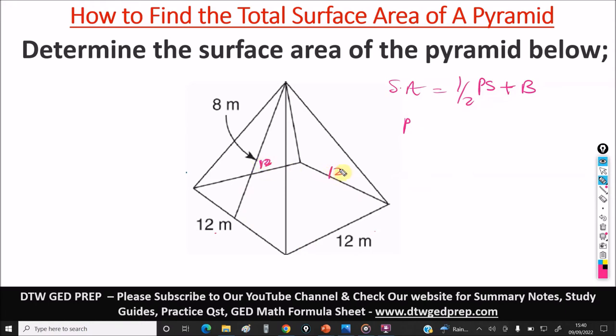The perimeter of the base: this is 12, this is 12. The perimeter of anything is just the summation of all its sides. So the perimeter is 12 plus 12 plus 12 plus 12, just like the perimeter of the square which is 4L. That is 4 times 12 and that's 48. So the perimeter is 48 meters.